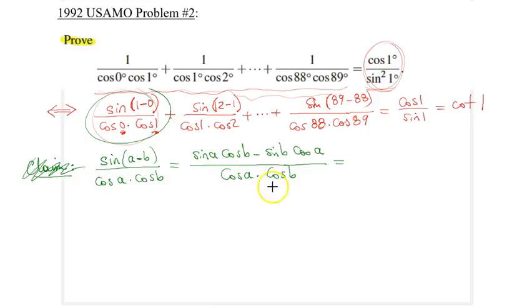In the first fraction, the cosine b's cancel out so I'm left with sine a over cosine a, which is tangent a. Similarly in the second fraction, the cosine a's cancel out, so I have minus tangent b remaining. That's all.